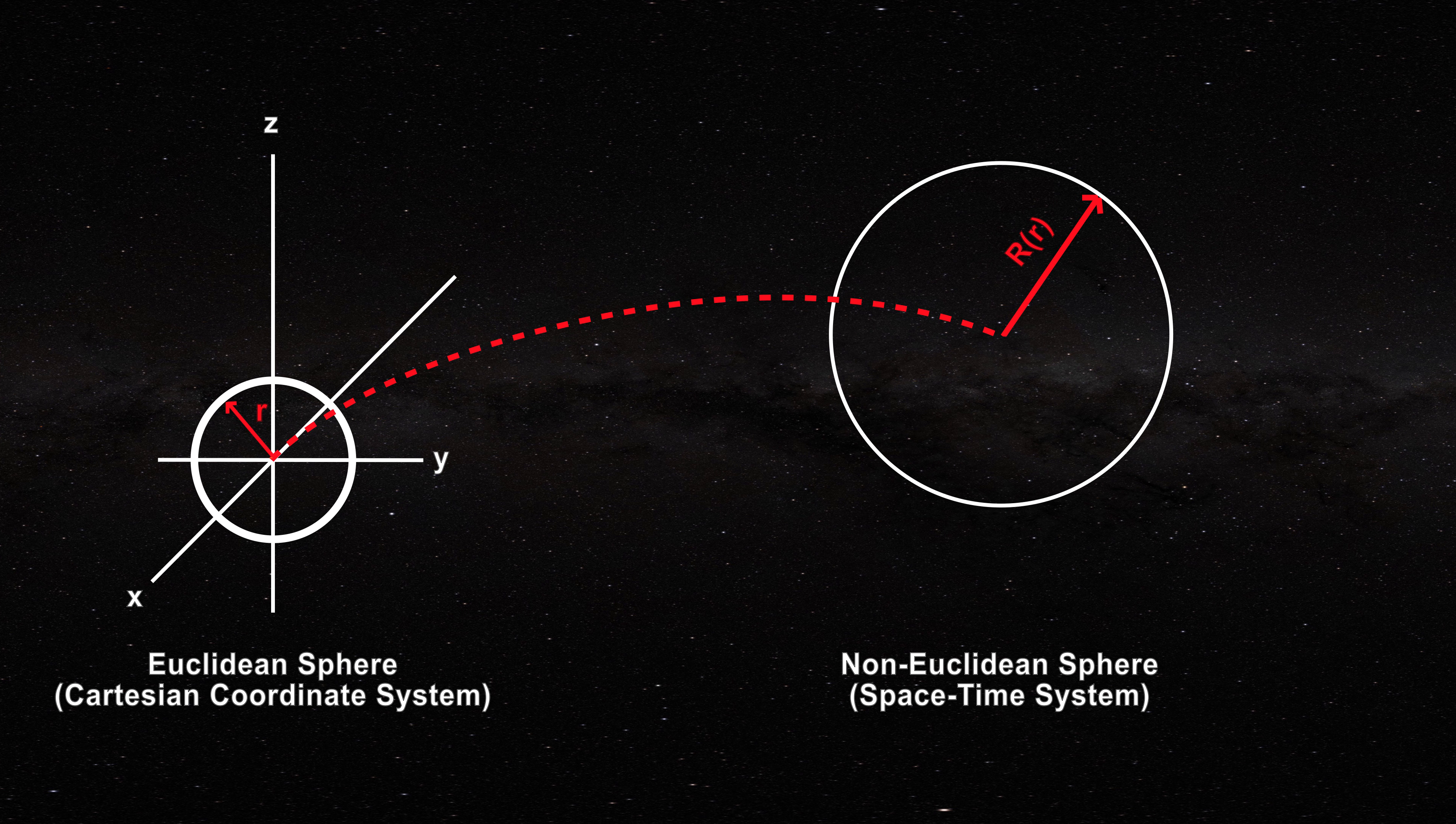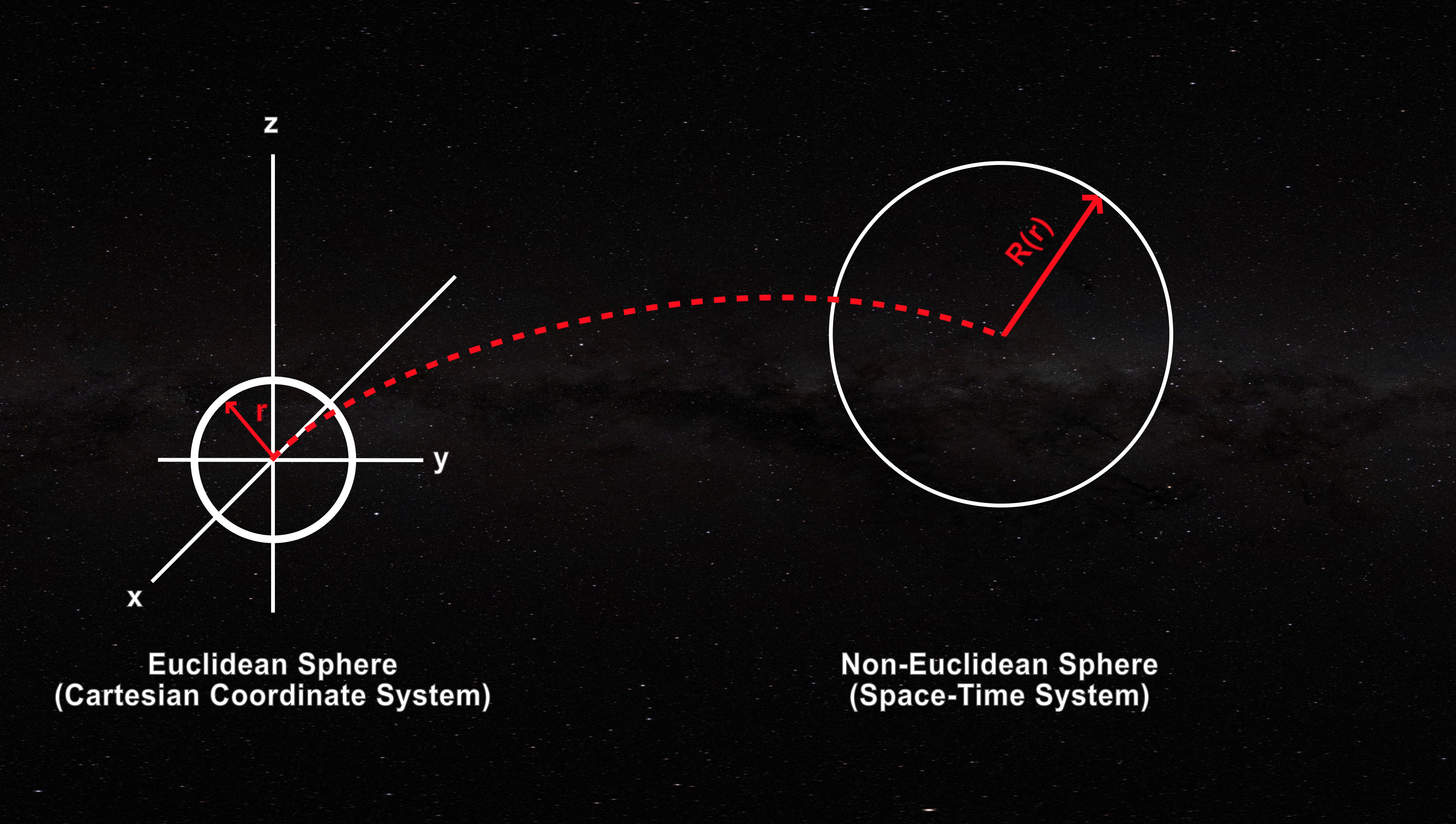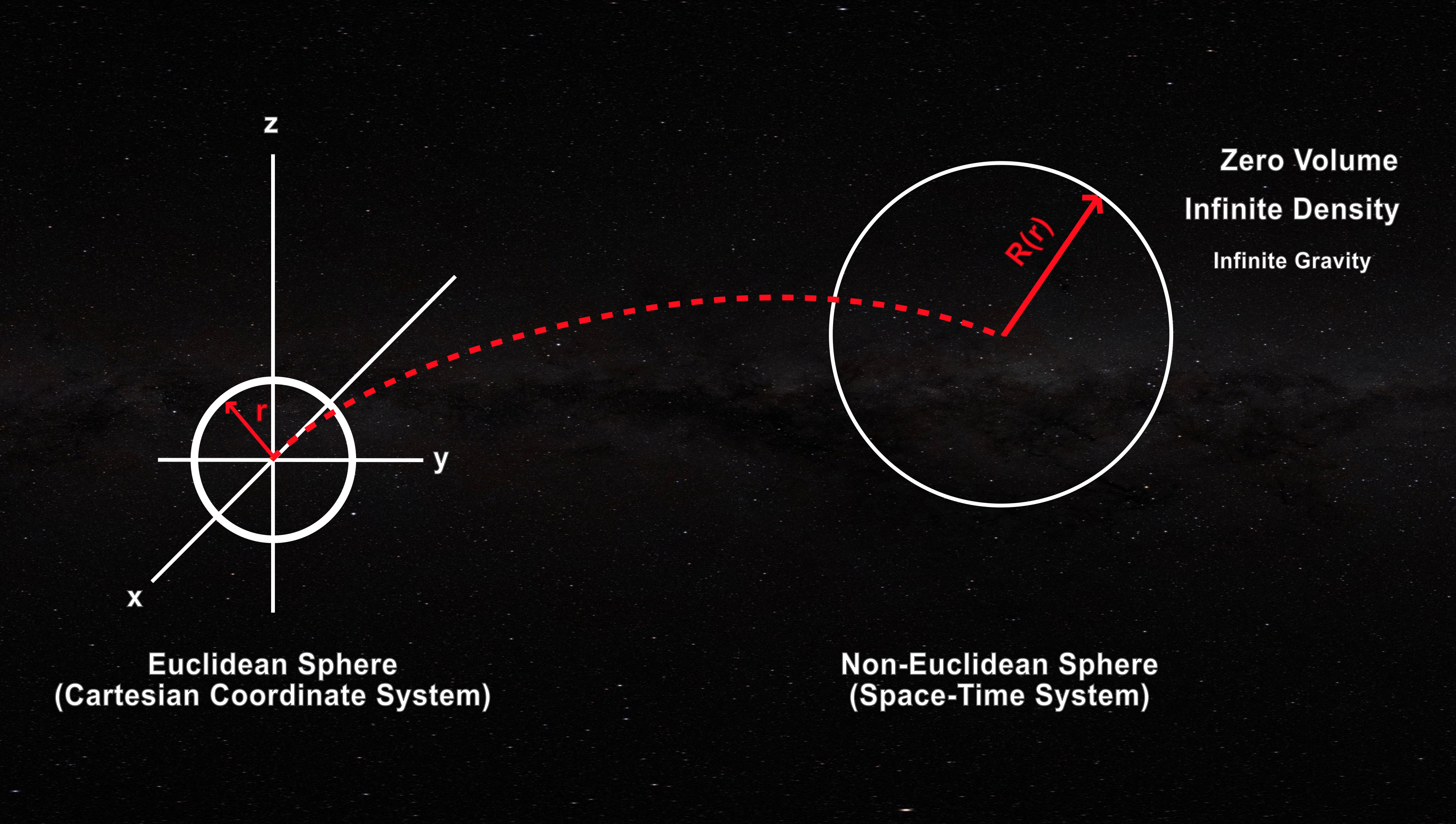The center of the non-Euclidean sphere places the finite mass of the black hole in zero volume, infinite density and infinite gravity.